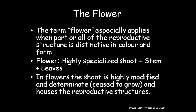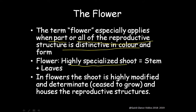The flower especially applies when a part or all of the reproductive structure is distinctively colored and formed. The flower can also be termed as a highly specialized shoot — the stem plus leaves. The shoot is highly modified and determinate, meaning it ceases to grow, and houses a reproductive structure. So it is a condensed form of the stem shoot.